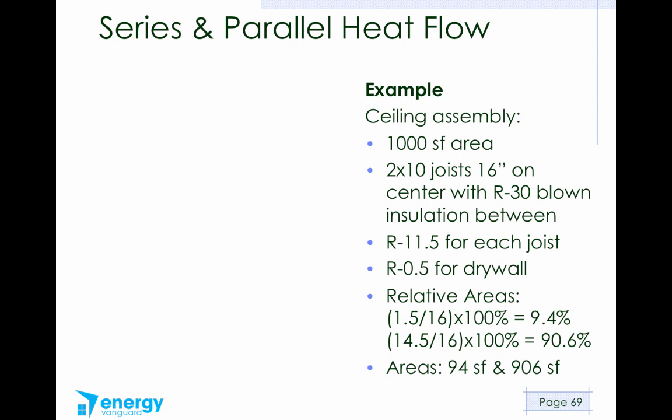If we multiply those percentages out, 9.4% of 1,000 square feet is 94 square feet, and 90.6% of 1,000 square feet is 906 square feet. Those are the areas of the ceiling joists and the insulation, respectively. If you want to give this a stab, see if you can try to find the average U value and the average R value now. Hit the pause button and see if you can get those calculations.